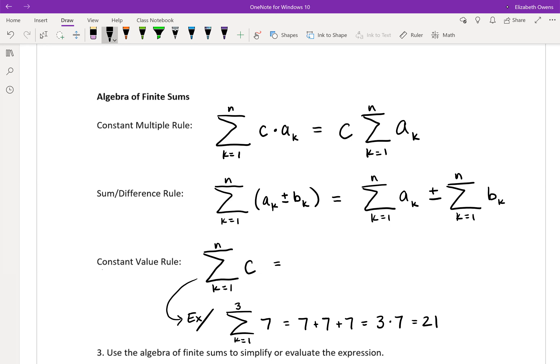So we're going to just take n times c for this constant value rule.